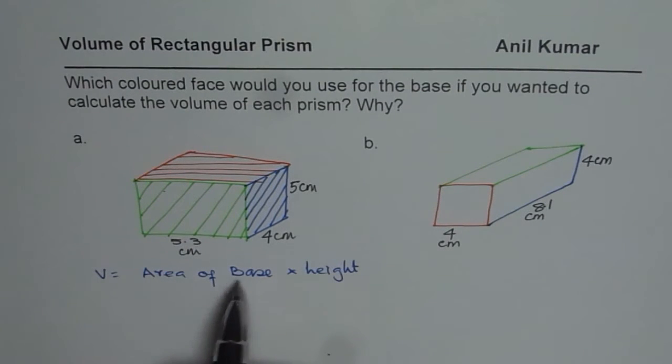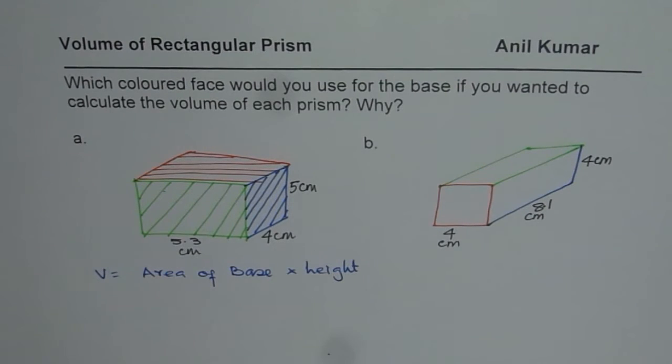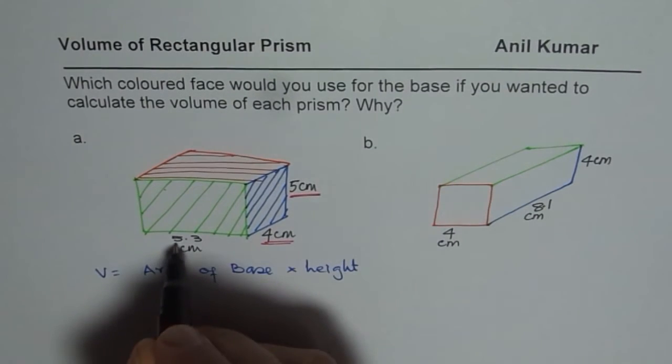Now, since area of the base has to be calculated, in the first figure we have 4, 5 and 5.3. So we will go with the round numbers, right? These are whole numbers, 4 and 5. And that is a decimal number. It is kind of difficult to multiply by decimal number.